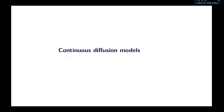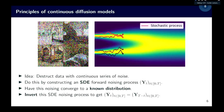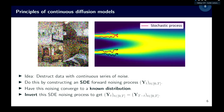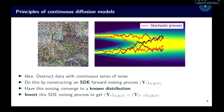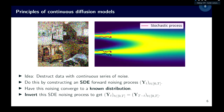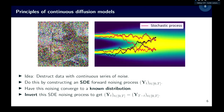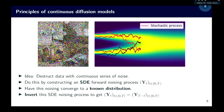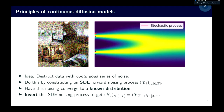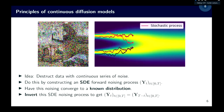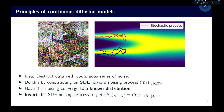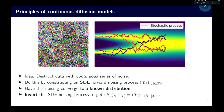For continuous diffusion models, the key idea is to start with data samples at time T=0 and noise them until reaching a known limiting distribution at T=1. We formalize this with a stochastic differential equation (SDE), the forward noising process, which continuously destroys data samples until time T. This converges to a known distribution such as a Gaussian.